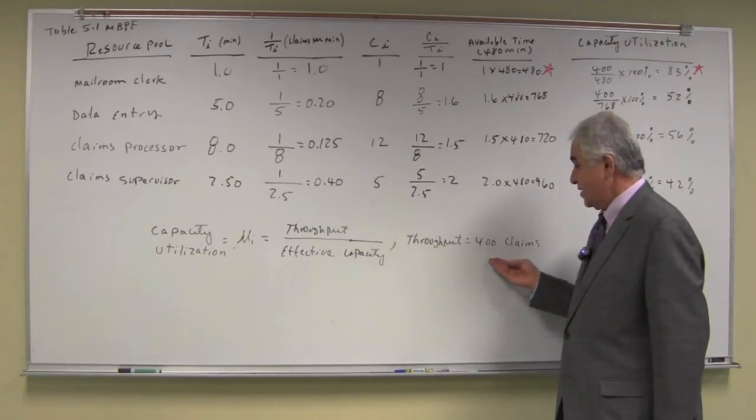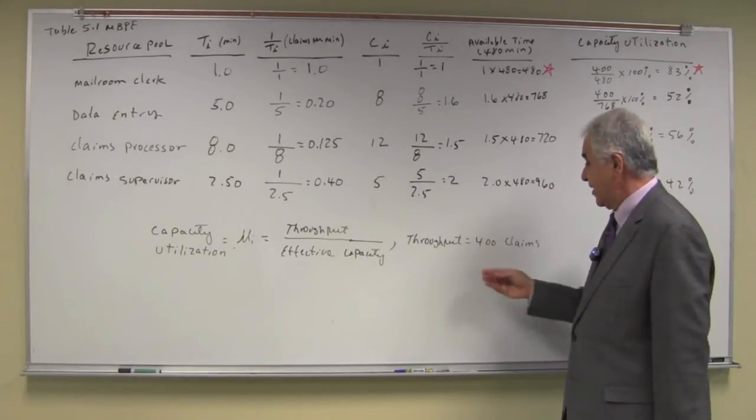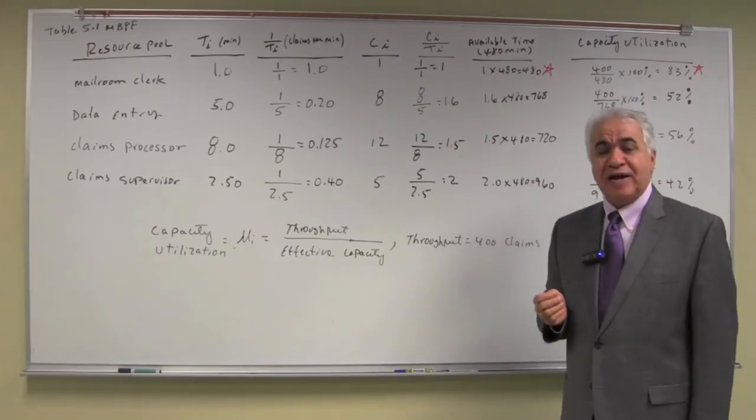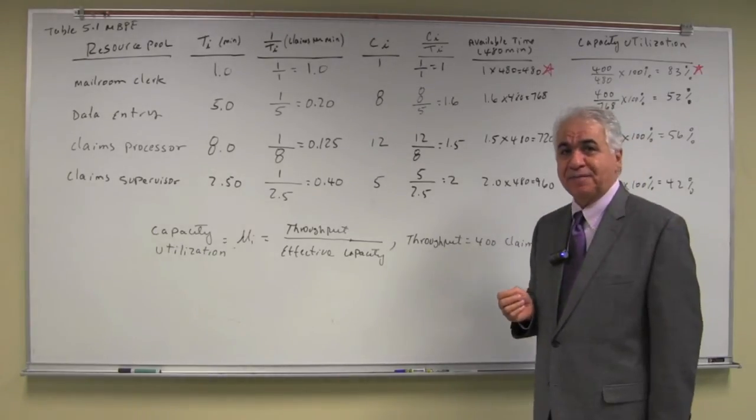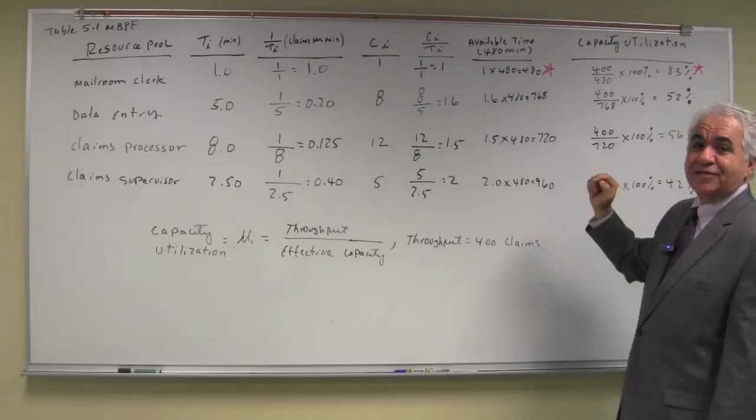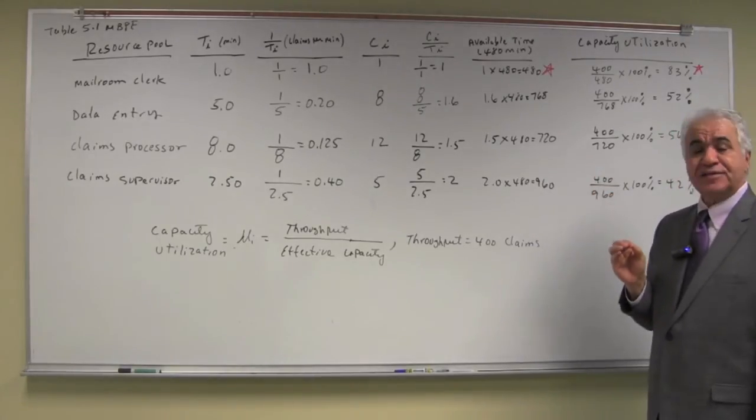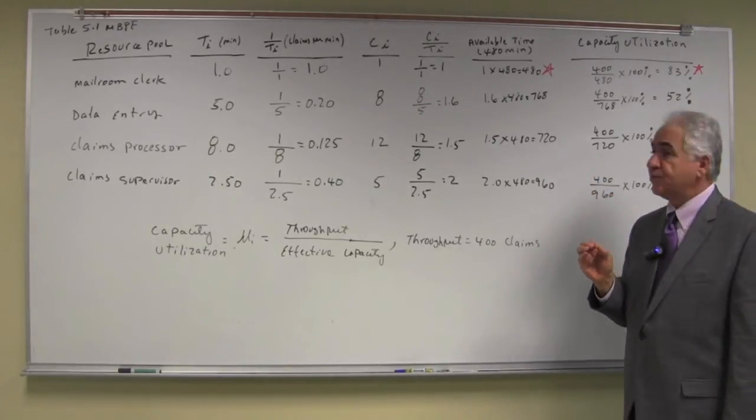Let's assume that the throughput of the process at the end of the day we're averaging 400 claims per day. From there in the last column, I can determine the capacity utilization of each resource pool.